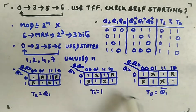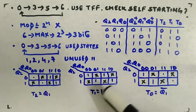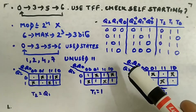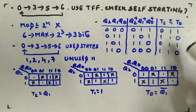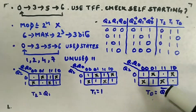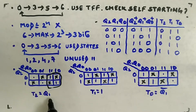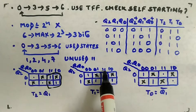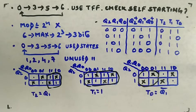Now make K-maps for T2, T1, and T0. The don't-care entries (unused states) are marked with crosses — four of them. Zeros are marked with dots. Grouping the ones: T2 gives a pair of four → T2 = Q1. T1 gives a pair of eight → T1 = 1. T0 gives a pair of four → T0 = Q1'.